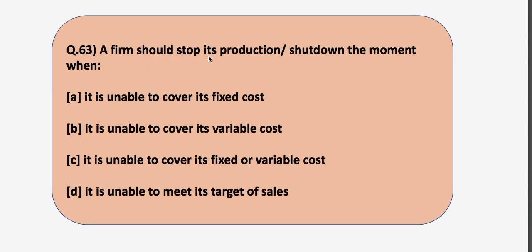The next question is: a firm should stop its production the moment when. Out of the four options, you have to tell me. If a firm is running a factory and that factory is on rent, when should a firm stop its production? When it is unable to cover its fixed cost, when it is unable to cover its variable cost, when it is unable to cover its fixed or variable cost, or when it is unable to meet its target of sales.